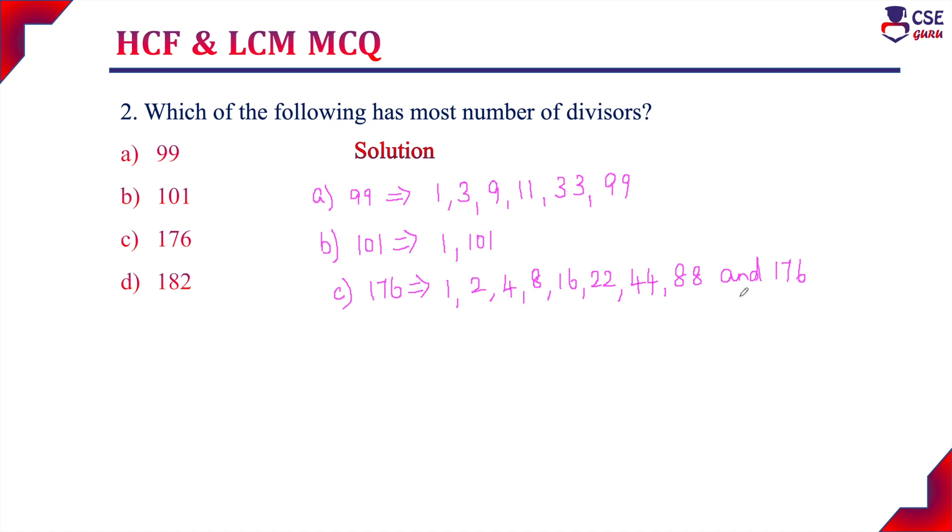Option D, 182, the possible divisors are 1, 2, 7, 13, 14, 26, 91, and 182 itself. These are all the possible divisors for 182.